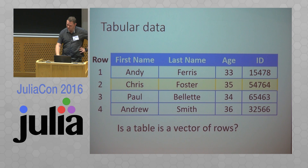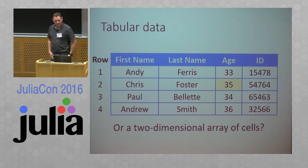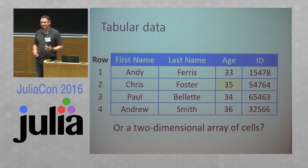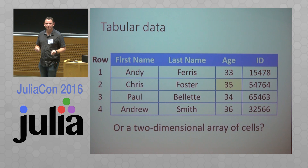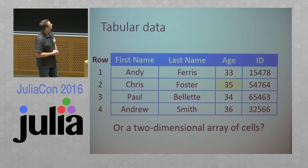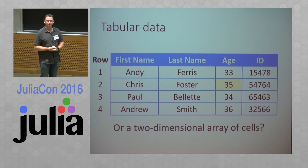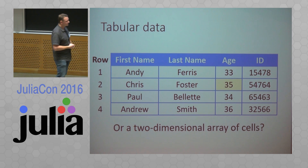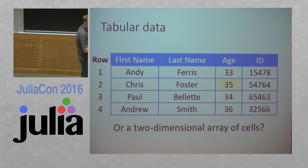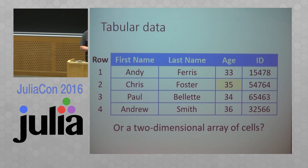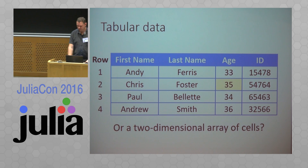Or is a table a two-dimensional array of cells? Well, I don't think that picture fits very well with Julia's type system. So probably you'd store it in one of the first two ways in Julia.